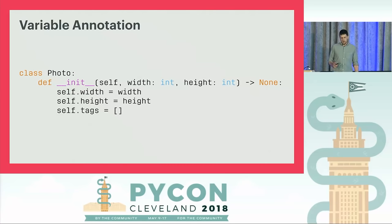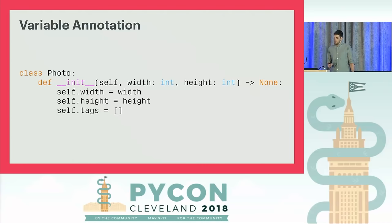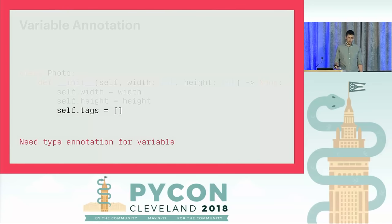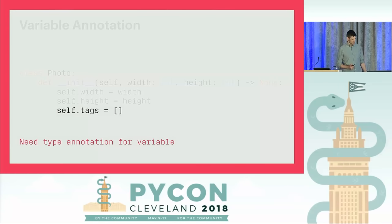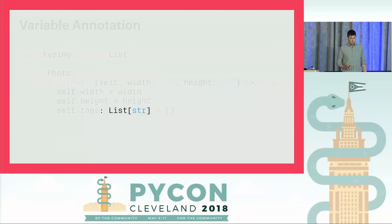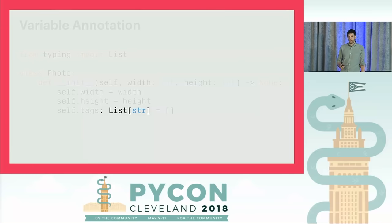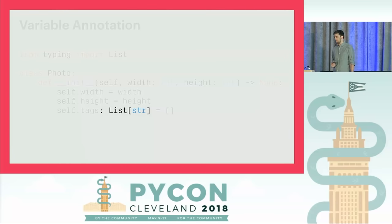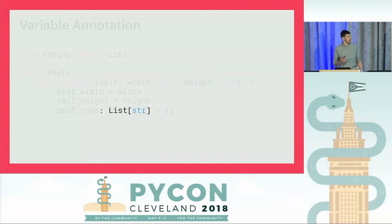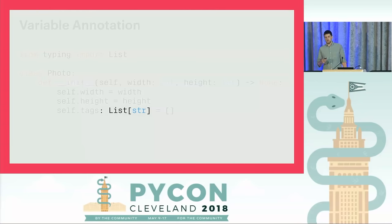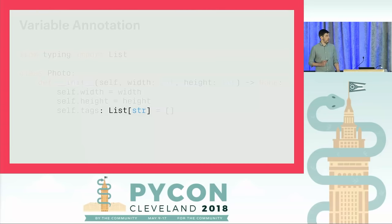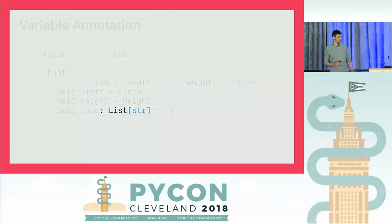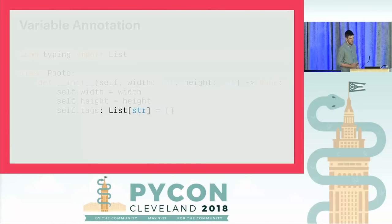In some cases type inference won't be enough — for instance, if we create an empty container, the type checker doesn't know what we intend to put into it, so it asks us to be explicit. We can add a variable type annotation like this: colon, then the type, before the equals sign, saying this is a list of strings. This variable annotation syntax with a colon after the variable name is new in Python 3.6; if you're on an older version, there's a comment-based alternative syntax in the documentation.